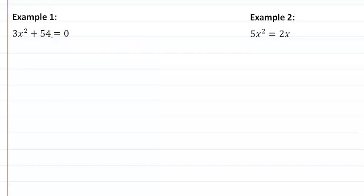So in our first example here, I notice that I have an A and I have my C. What I'm missing is my B, so we want to use B equal to zero.